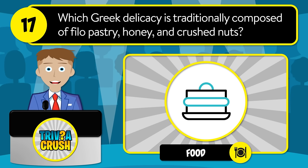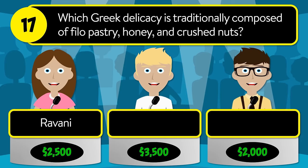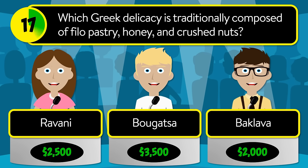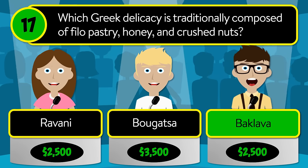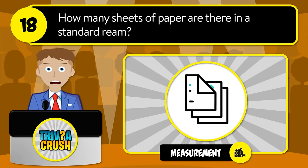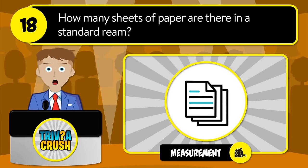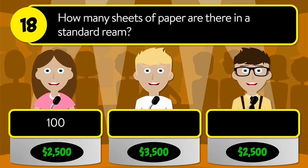Question number seventeen: which Greek delicacy is traditionally composed of phyllo pastry, honey, and crushed nuts? Is it ravani, bugatsa, or baklava? The correct answer is baklava. Question number eighteen: how many sheets of paper are there in a standard ream? Is it 100, 300, or 500?